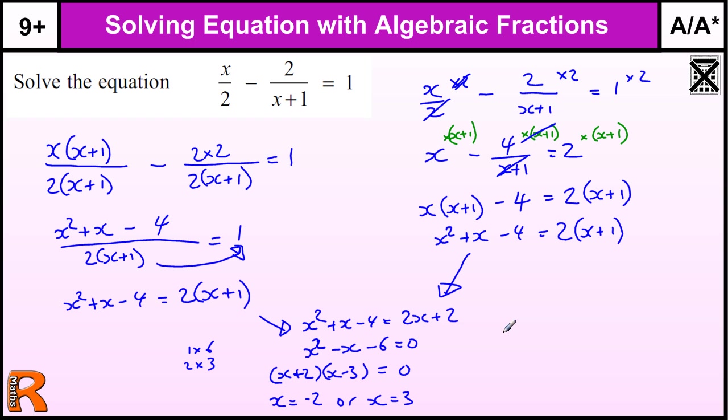So there we go. Very complicated question worth four marks. Lots of ways of getting marks. Each step probably gets you somewhere. Getting a common denominator, combining or multiplying through to eliminate denominators, and rearranging to get the quadratic will probably get you at least two marks, probably three, and one for the solutions.